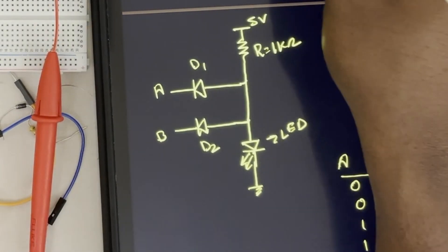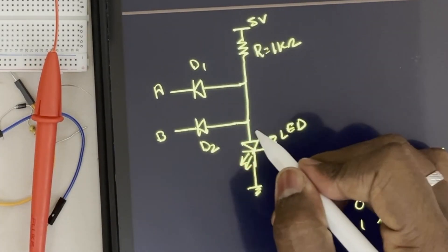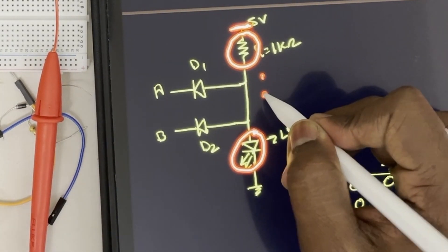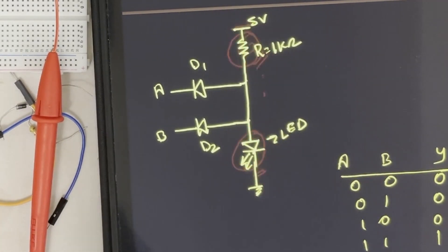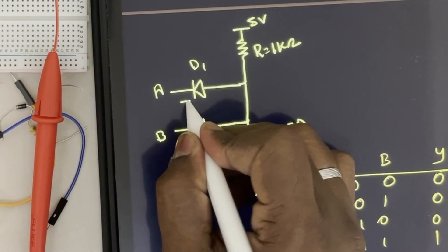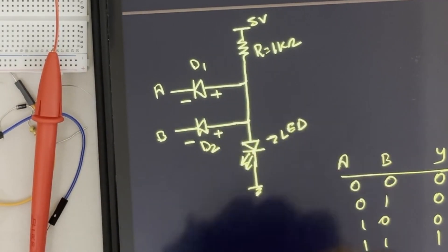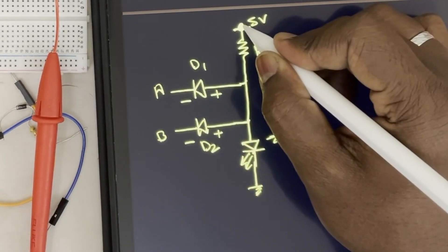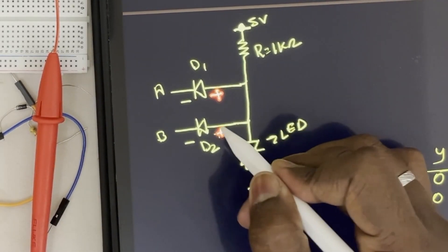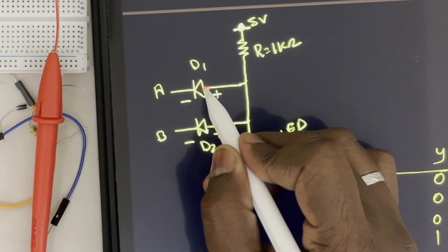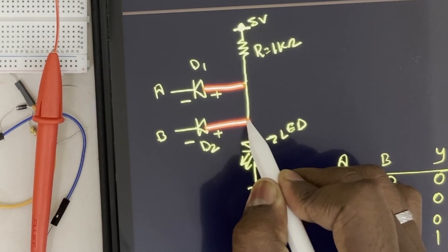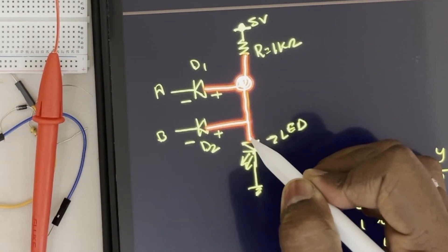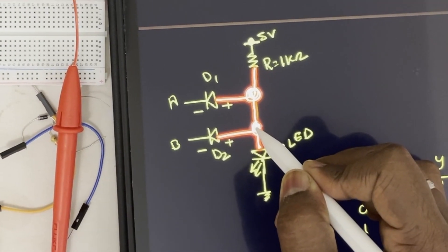Here I didn't connect any other resistance because this LED is already connected with this resistance and the source, so we don't need any external resistance — this resistance will limit the current for the LED. For diodes D1 and D2, this side is negative and this side is positive. One part of the resistance connects directly to the positive of the voltage source, and the other part connects to the positive terminals of both diodes. The positive terminal of the LED is also connected at that same point.